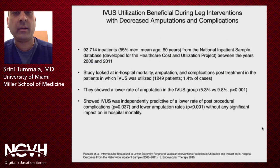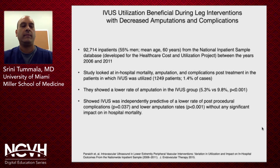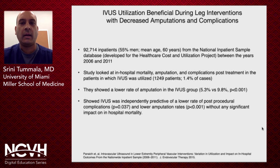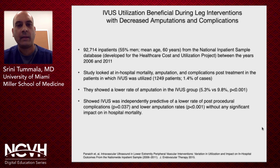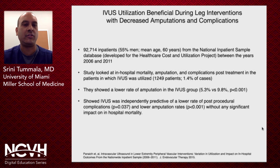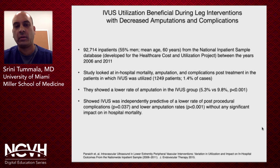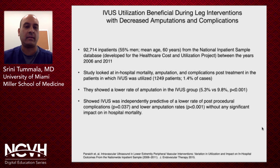What about IVUS utilization and amputation rate as well as complication rates? An analysis of about 92,000 patients from the National Inpatient Sample Database between 2006 and 2011 looked at in-hospital mortality, amputation, and complications after treatment in patients in which IVUS was utilized — studying about 1,200 of those patients. The analysis showed a lower rate of amputation in the IVUS group and that IVUS was independently predictive of a lower rate of post-procedure complications as well as a lower amputation rate without any impact on in-hospital mortality.